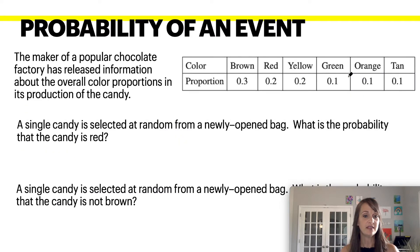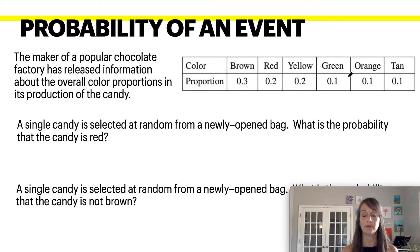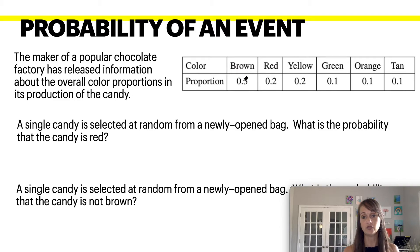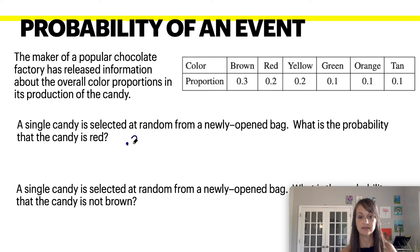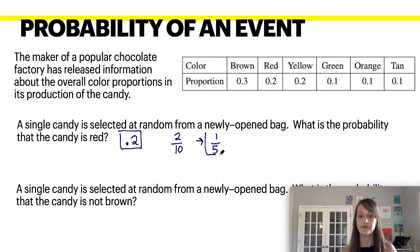Next, probability of an event: a popular chocolate factory has released information about the overall color proportions of its candy. A single candy is selected at random from a newly opened bag. What is the probability that the candy is red? Based on the given proportions, the probability is 0.2, or two out of ten, which reduces to one-fifth as a fraction.